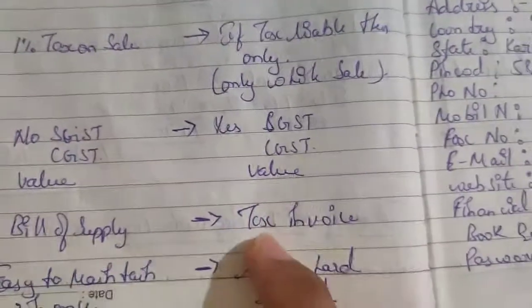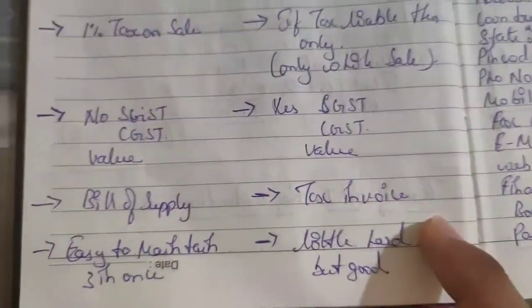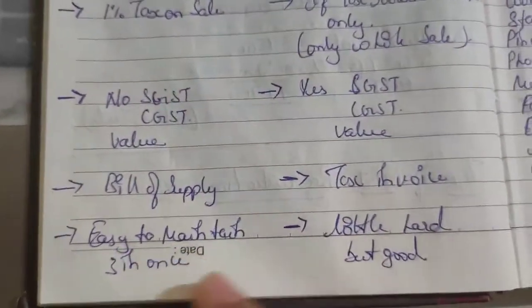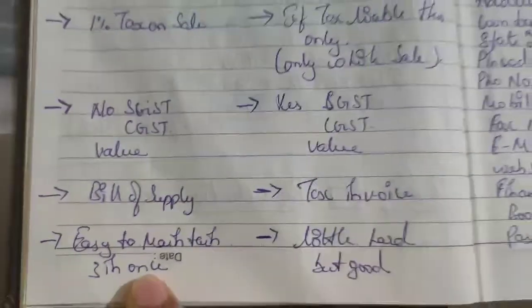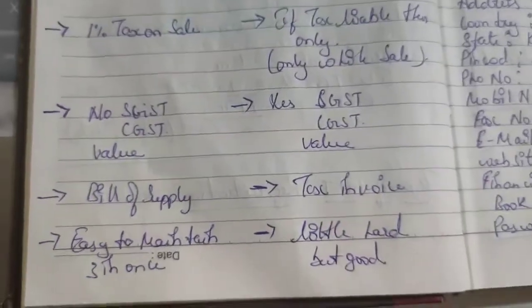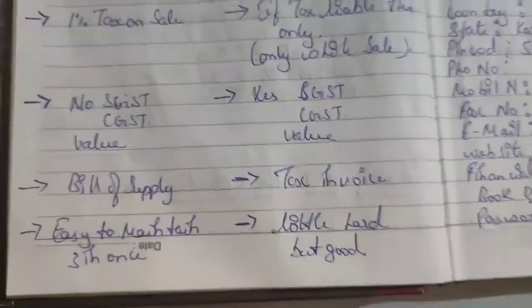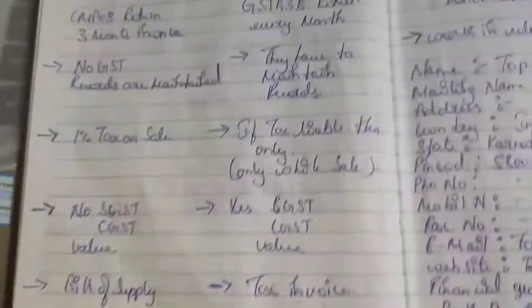The composition firm issues a Bill of Supply, while a regular firm issues a Tax Invoice. The composition firm files returns once every 3 months, which is easy to maintain. The regular firm files returns every month, which is a little more work but is considered very good practice.